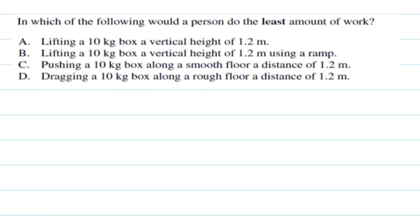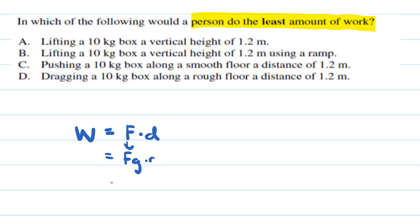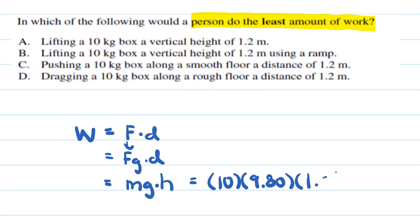In this next homework problem we have a theory-related question. We need to figure out in which of the following scenarios a person would do the least amount of work. For all four options, we can calculate work as force times distance, which becomes mg times height. Since the mass, g, and distance are roughly the same across options, we have to examine each option carefully.